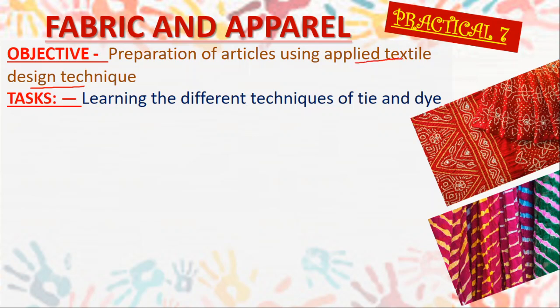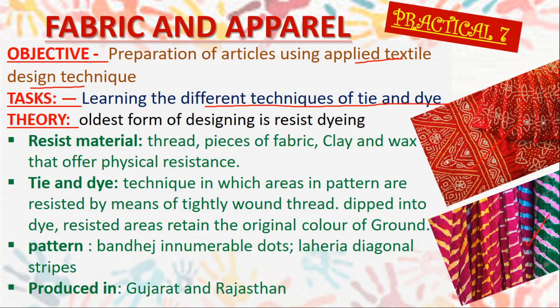You have to do three textile design techniques. The task here is to learn the different techniques of tie and dye. The theory part: tie and dye is one of the oldest forms of resist dyeing. Resist means to stop or obstruct — dyeing by restricting some part. The part which is restricted, the color or dye will not enter it, and the part which is not restricted will get the color you are dyeing it. You will get the print as per the resist.